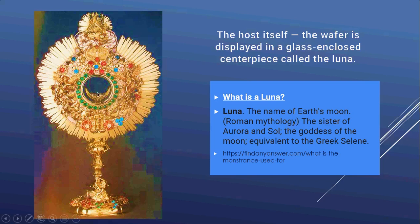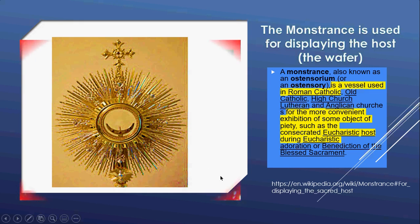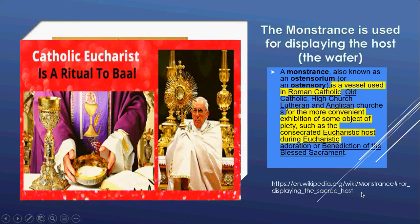This symbolism appears throughout their eucharist. The wafer is displayed in a glass-enclosed centerpiece called the luna — and luna is the name of Earth's moon in Roman mythology, the sister of Aurora and Sol, the goddess of the moon, equivalent to the Greek Selene. The monstrance is used for displaying the host in the Roman Catholic church for the eucharist. There's the moon surrounded by the sun rays. We did a whole video about this — the Catholic eucharist is a ritual to Baal.